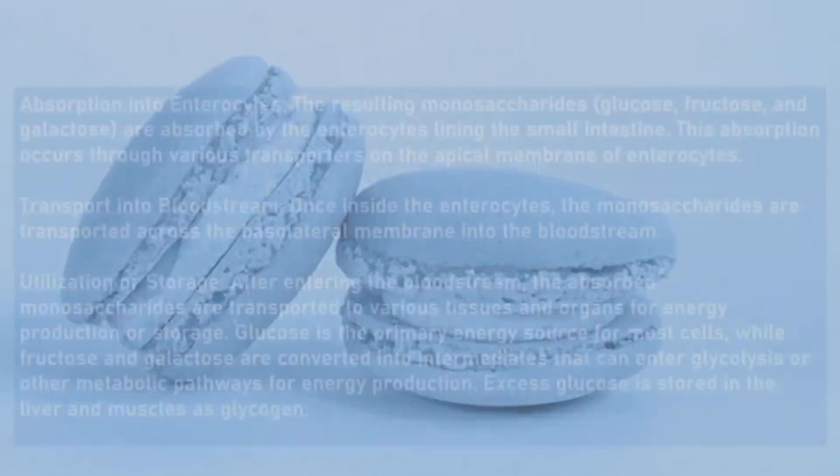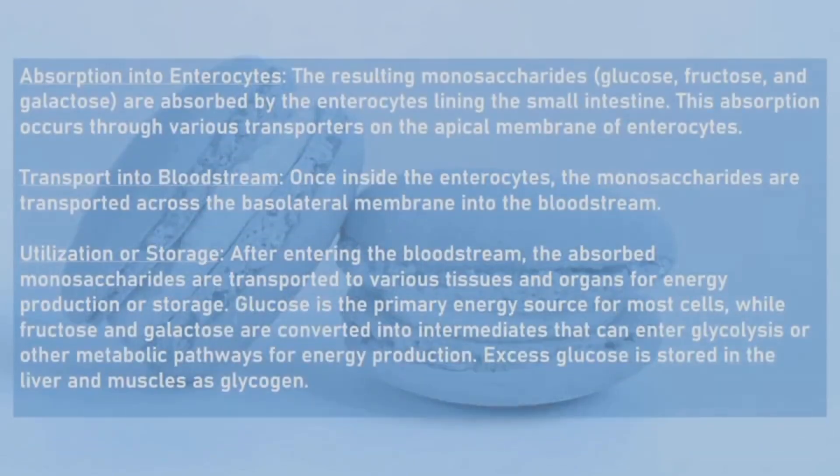9. Absorption of enterocytes: The resulting monosaccharides are absorbed by the enterocyte lining in the small intestine. The absorption occurs through various transporters on the apical membrane of the enterocyte.